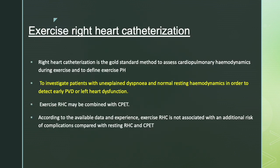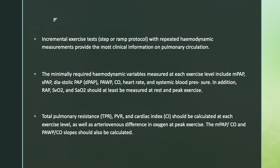Another form of right heart catheterization testing is exercise right heart catheterization. This is a very interesting and unique concept. Although right heart catheterization is the gold standard for assessing cardiopulmonary hemodynamics, sometimes we need to observe these hemodynamics while the patient is exercising — this is how we define exercise-induced pulmonary hypertension. It is indicated for patients with unexplained dyspnea, normal resting testing, and desaturation on exercise, to detect early pulmonary vascular disease or left heart dysfunction. This can also be performed alongside cardiopulmonary exercise testing and is not associated with additional risk compared to resting right heart cath.